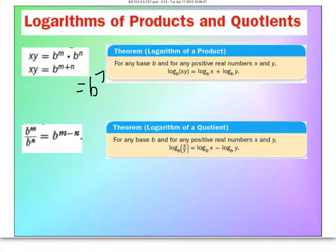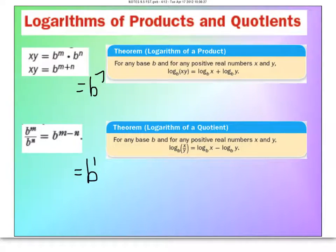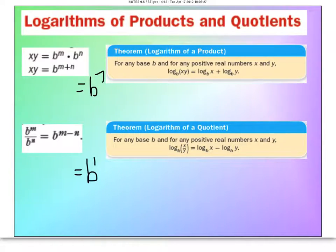For the quotient rule: with exponents, b to the m divided by b to the n means you subtract the exponents — b to the 4th divided by b cubed equals b to the 1st. So division in exponent world is the same as subtraction. Therefore, log of x divided by y can be pulled apart as log of x minus log of y. We'll either expand one log into multiple logs or condense multiple logs into one.